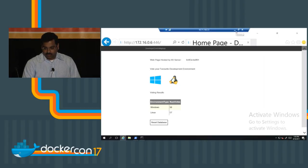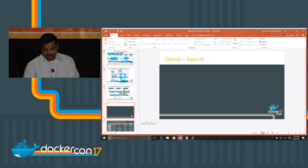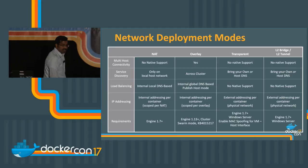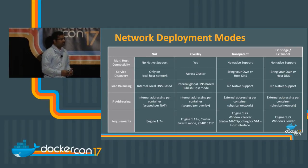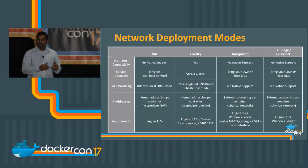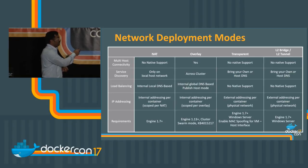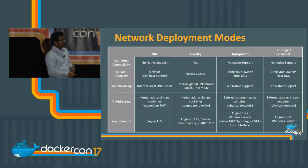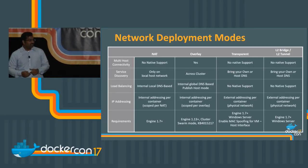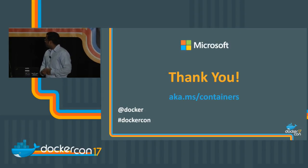That was the demo of Swarm with Windows and Linux nodes. This summary slide covers all the different network modes — highlighting differences in multi-host connectivity, service discovery, load balancing, and IP addressing. One important note: if you are going to use overlay network mode, make sure the required KB is installed — it was available as of last Tuesday. Make sure it's available before you try overlay network mode in Server 2016.